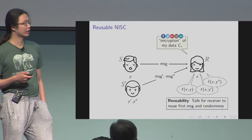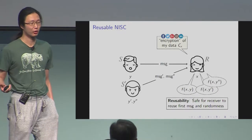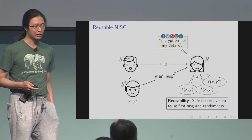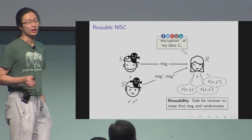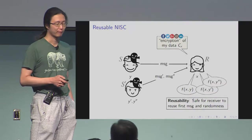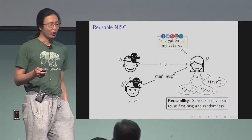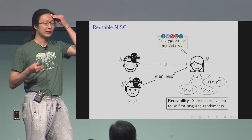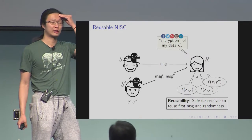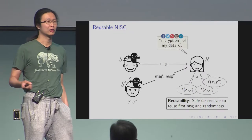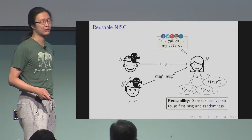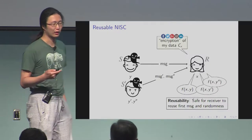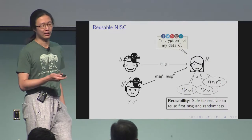For reusability, we want the receiver to not need to post a new Twitter message every time she uses this protocol. When a new sender comes, he can just read the Twitter and use the same message and send the receiver a message, and the receiver should also know the corresponding function outputs. If you only consider correctness and semi-honest security, this automatically goes through. But when you consider a malicious party — in particular, when the sender is malicious — things become quite tricky. When all the senders are malicious, they can send multiple messages to the receiver, learn the receiver's behavior after she gets the message, and also send new messages adaptively. We want the protocol to be secure even under such attacks.